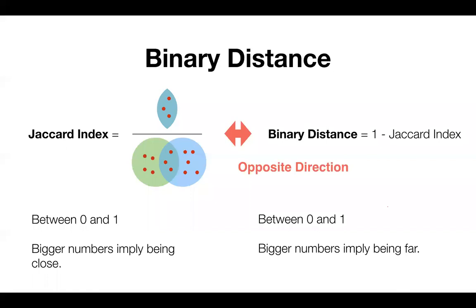Once you do 1 minus the Jaccard index, a bigger number means far and a smaller number means closer. The calculation method is different from Euclidean or Manhattan. Binary distance is more convenient when you have this kind of voting-type data where values are only 1 or 0. But if your numbers are things like weight, height, salary, or sales — values that can't be expressed as just 1 or 0 — you'd want to use Euclidean or sometimes Manhattan instead.